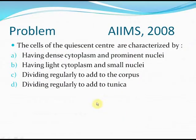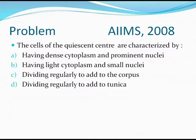A question was asked in the AIMS entrance examination 2008: The cells of the quiescent center are characterized by — (A) having dense cytoplasm and prominent nuclei, (B) having light cytoplasm and small nuclei, (C) dividing regularly to add up to the corpus, or (D) dividing regularly to the tunica. The correct answer is having light cytoplasm and small nuclei.